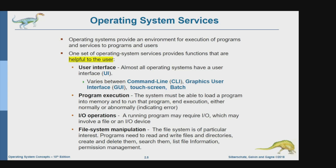The next part is about input and output operations. A running program may require input and output interfaces. For example, let's say we want to do the printing — the process of execution is printing, so we need input and output in order to print the process.